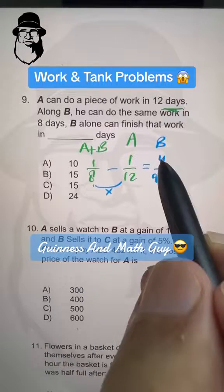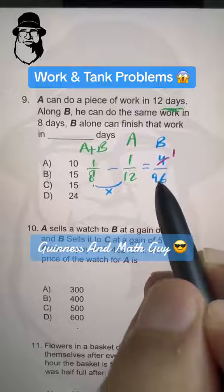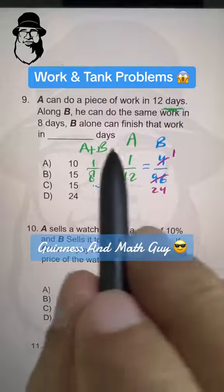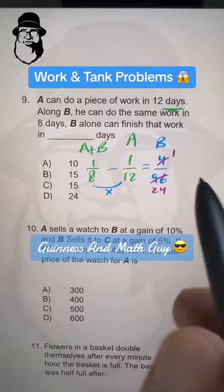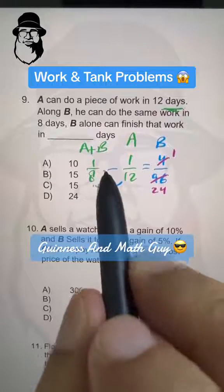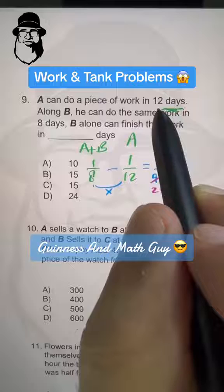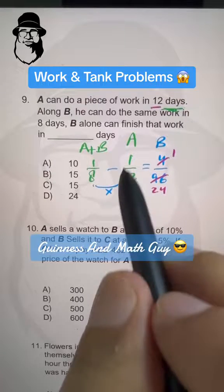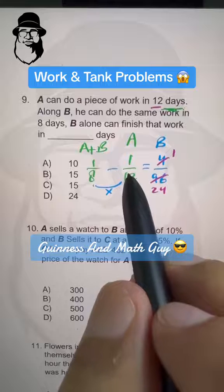But we can cancel them out. 4 times 1 is 4 and 4 times 24 is 96. Now, when we flipped 12, we made it 1 over 12. It became efficiency, work done in 1 day.